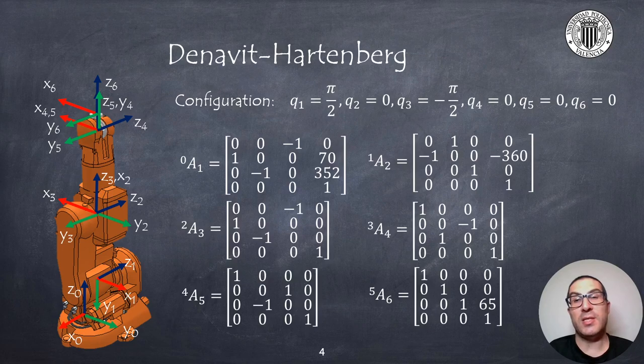Let's assume that we want to compute the Jacobian of the end effector at a given configuration. In the following example I will assume that the first joint is positioned at 90 degrees while the third joint is positioned at minus 90 degrees. The remainder of joints are in zero position. The robot for this configuration is as shown on the left.